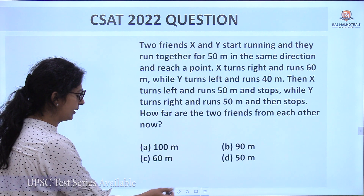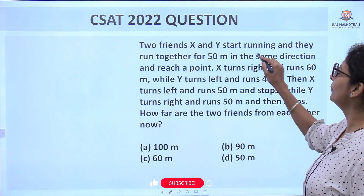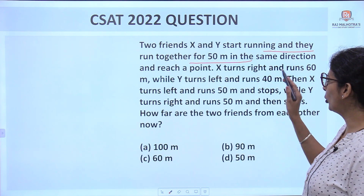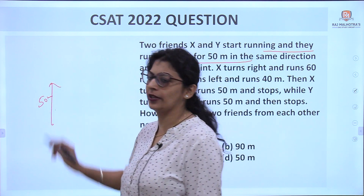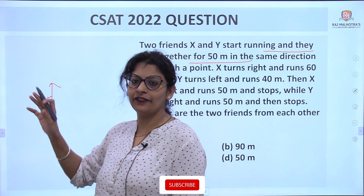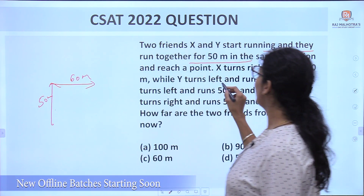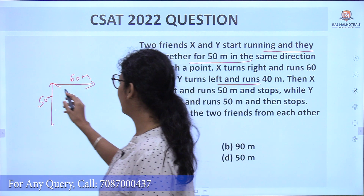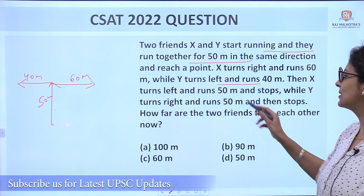Now let's check the question that was asked in the exam paper. Two friends X and Y start running together for 50 meters in the same direction — let's say North. Then X turns right and walks 60 meters. X and Y are now separating. Y turns left and runs 40 meters — so Y is going in the West direction for 40 meters.